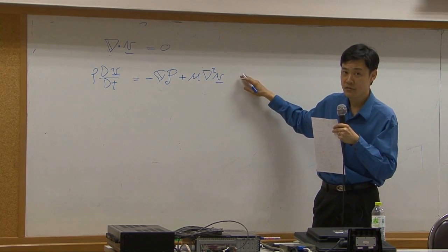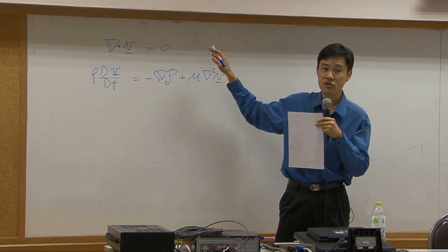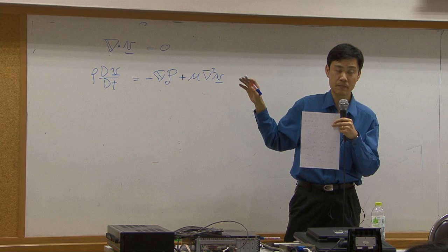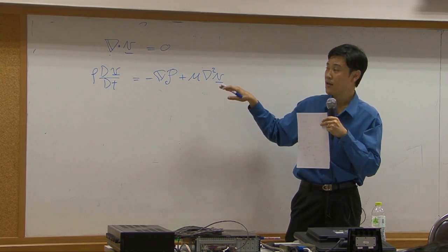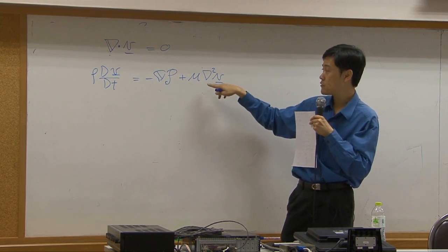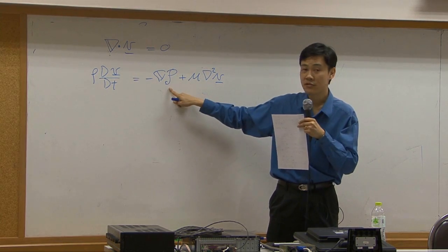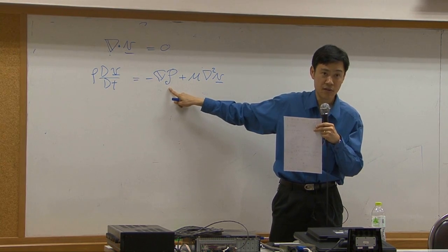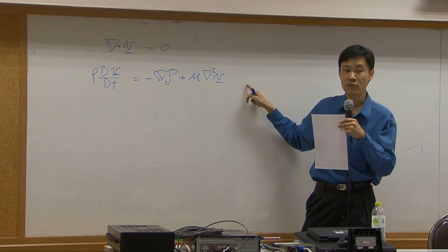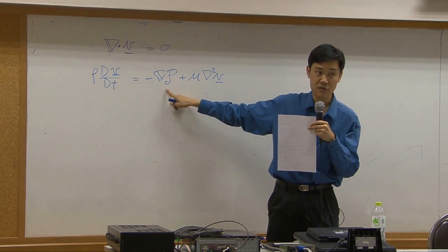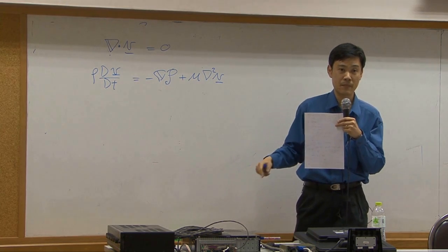We have two equations: this one is the equation of continuity with the assumption of constant density. This equation here is the equation of motion — it's the Navier-Stokes equation, because we apply Newton's law. You should notice that I use the term modified pressure instead of pressure, because I bring the gravitational term together with the gradient of pressure to form a modified pressure.